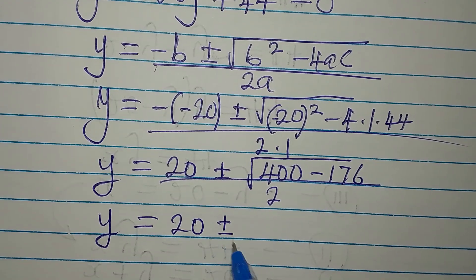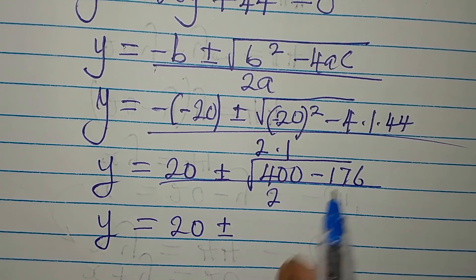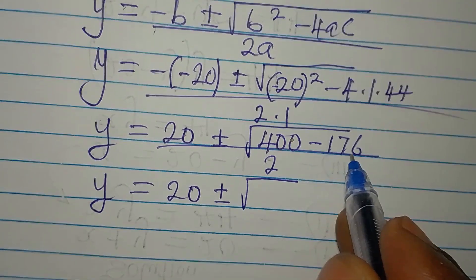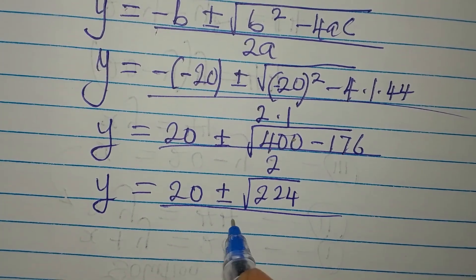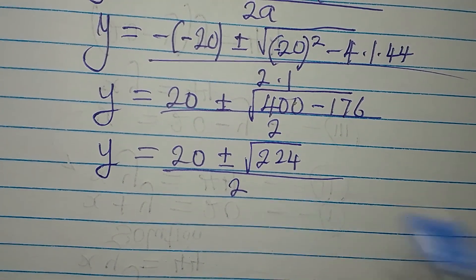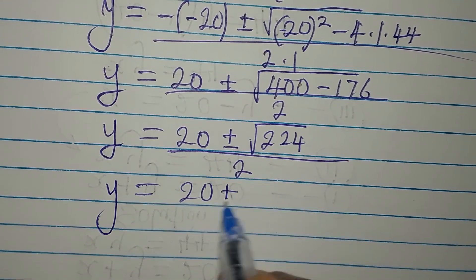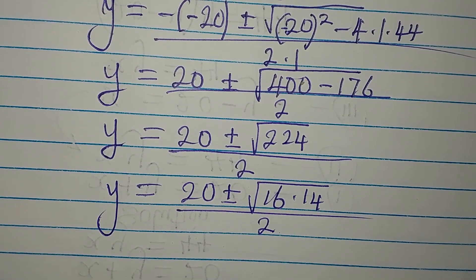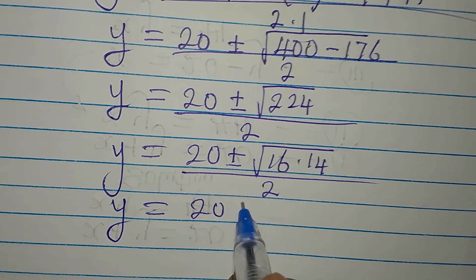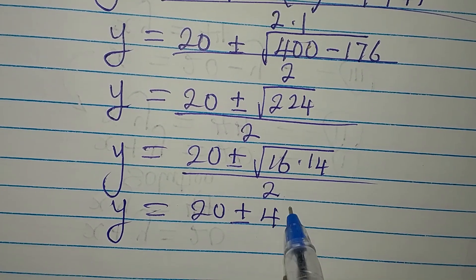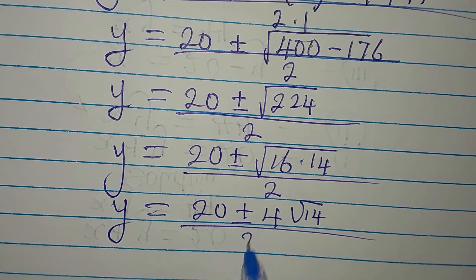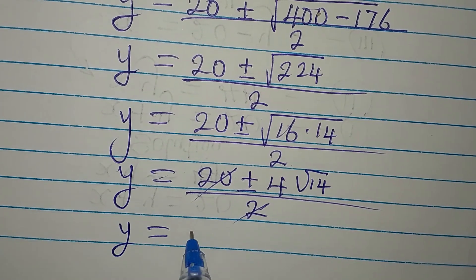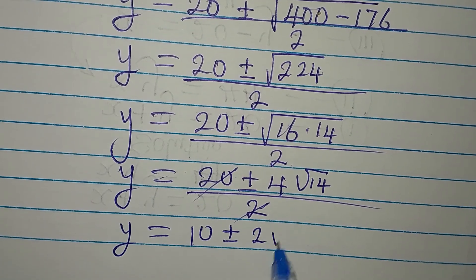So y equals 20 plus or minus the square root of (400 minus 176) over 2. Now 400 minus 176 is 224, and 224 is not a perfect square. We factor it as 16 times 14, so the square root of 224 equals 4 root 14. Dividing through by 2: y equals 10 plus or minus 2 root 14.